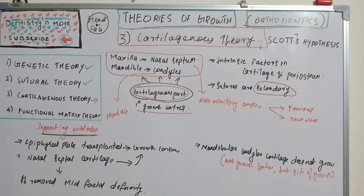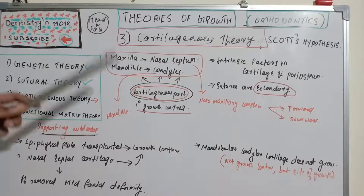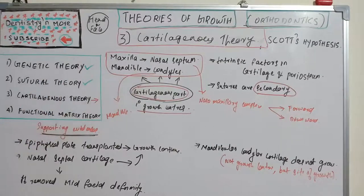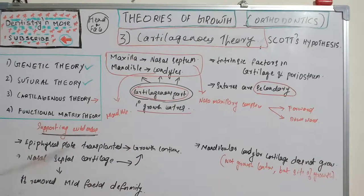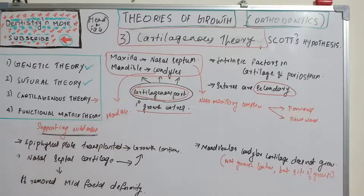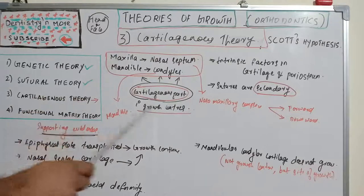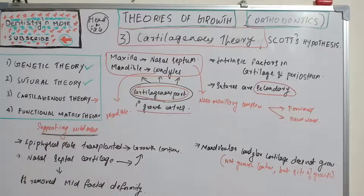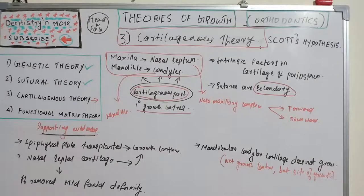All cartilages throughout the skull are primary centers of growth. Maxillary growth is attributed to the nasal septal cartilage, which drives forward and downward growth of the nasomaxillary complex — acting as a pacemaker of that growth. The mandible is likened to the diaphysis of a long bone bent with epiphyseal cartilage at both ends. That is how Scott explained the growth of maxilla and mandible.